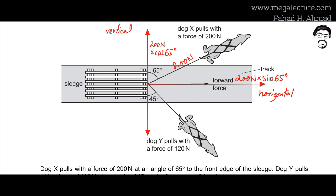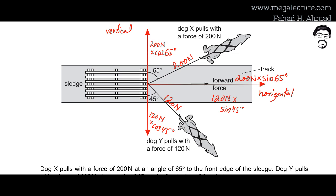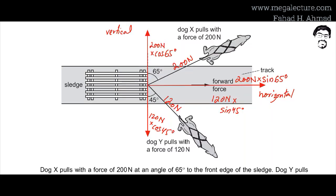Similarly for the 120 N force at 45 degrees: the horizontal component is 120 × sin(45°) and the vertical component is 120 × cos(45°). In the horizontal direction both forces point the same way, so they add: 200×sin(65°) + 120×sin(45°). The vertical components are in opposite directions and would be subtracted.